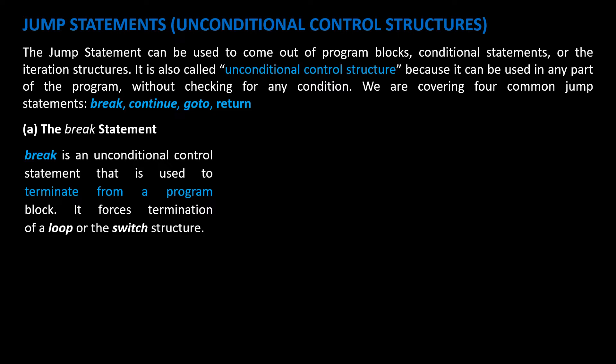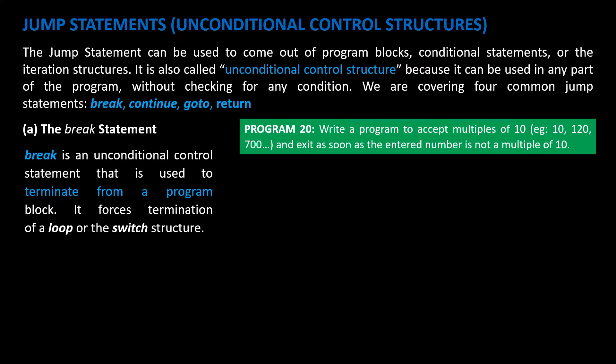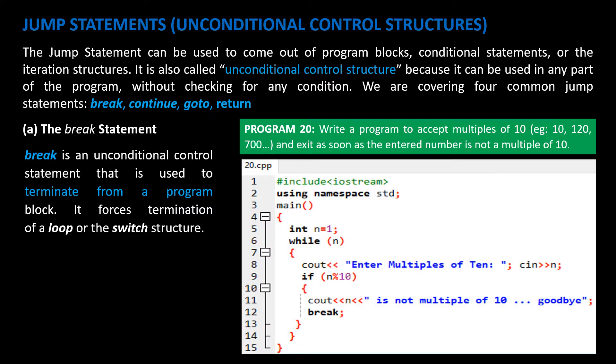So here I have program 20. Let's write a program to accept multiples of 10, like 10, 100, 20, 700, or similar. Exit from the program as soon as the entered number is not a multiple of 10. I hope it makes sense. Here is the program code. Try to understand the control flow by yourself.